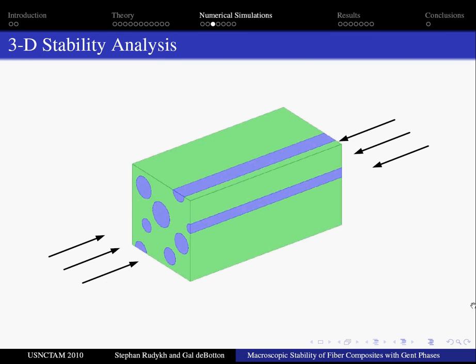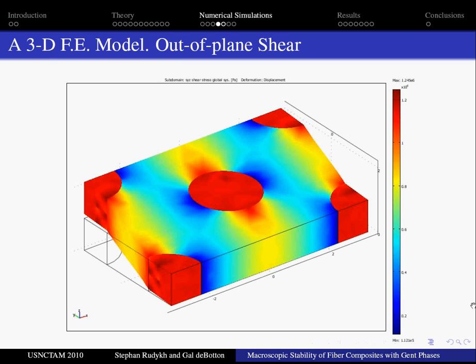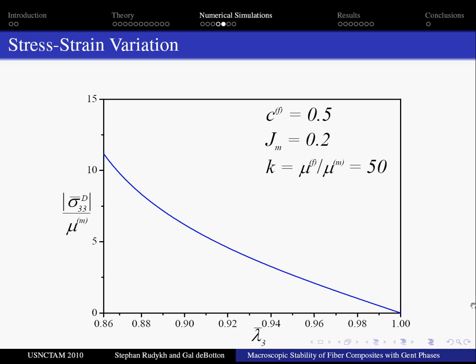However, concentration of deformation along the fibers demands essentially 3D analysis. To this end the demonstrated 3D unit cell was built. Here we see an example of the periodic unit cell under out-of-plane shear deformation.